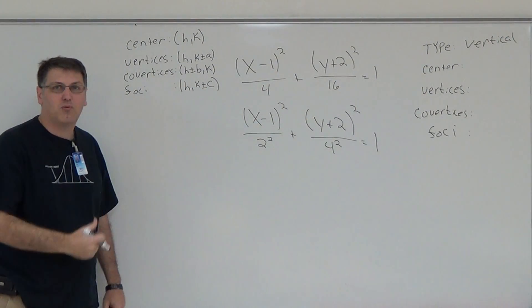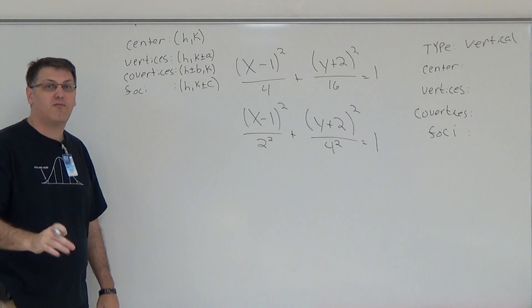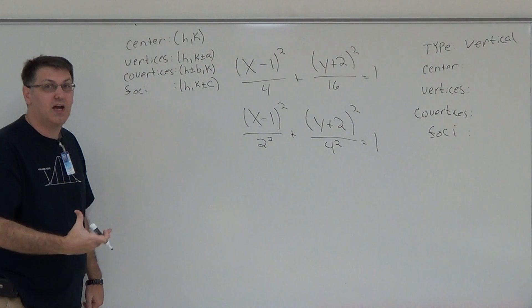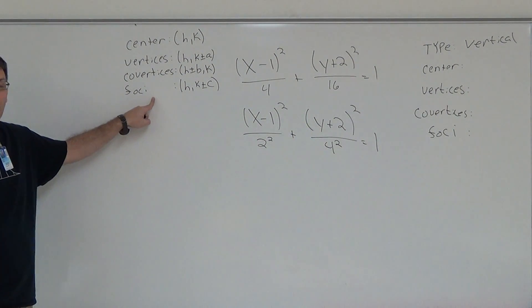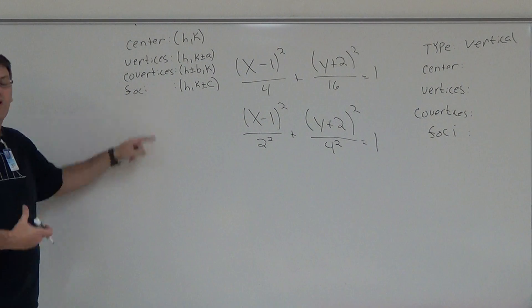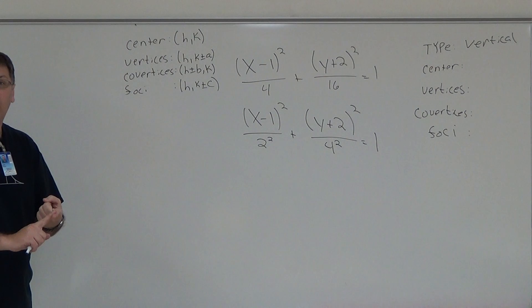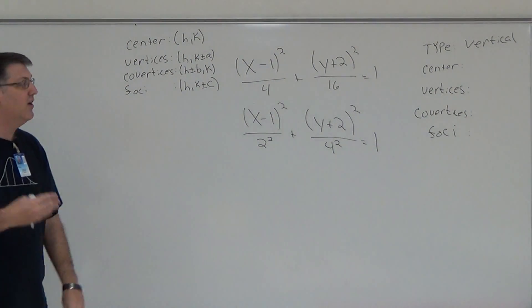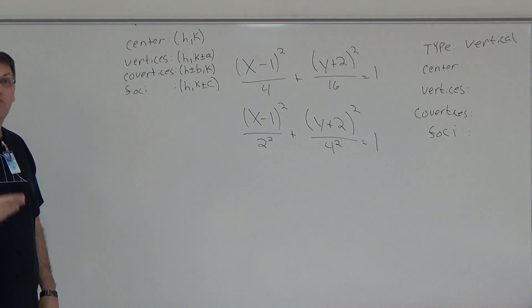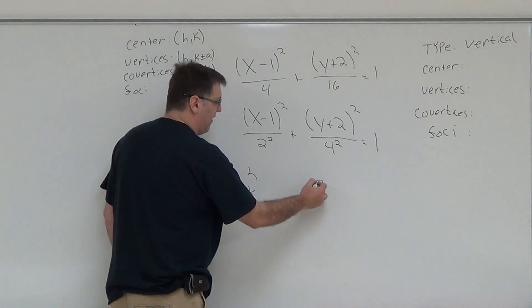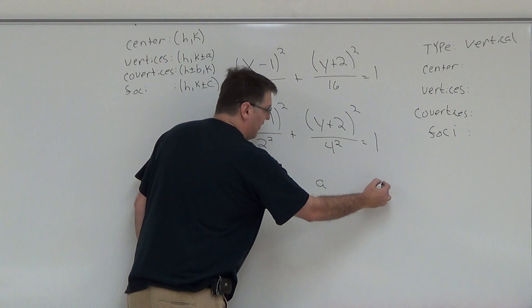That's the very first one you should be able to answer, because once you identify if it's horizontal or vertical, you're going to have formulas that will tell you how to find everything else. I've already written them here for the vertical, where we have our center, our vertices, our co-vertices, and the foci. They're just basic formulas, but in each of these formulas we need to know our H, our K, our A, our B, and our C. So, like we always do, write a list: H, K, A, B, and C.